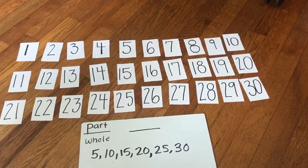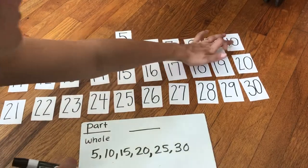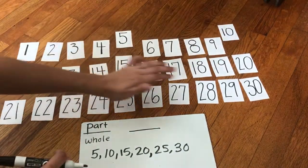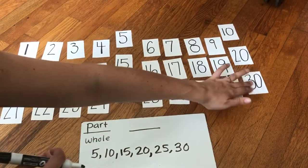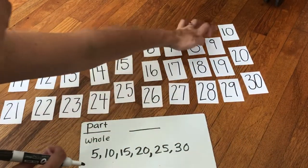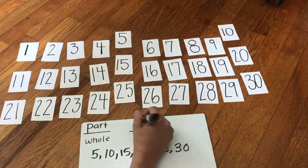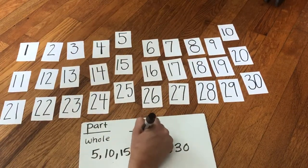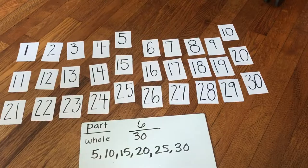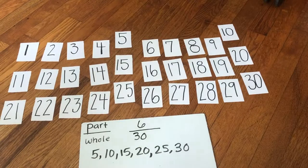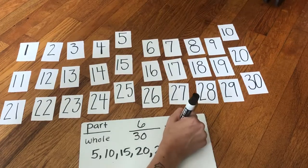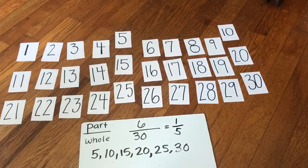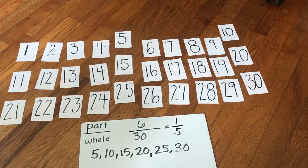So let's see how many cards that is. So I have five, 10, 15, 20, 25, and 30. So that's one, two, three, four, five, six. Six out of those 30 cards are multiples of five. And that can be reduced down to one fifth. So in its simplest form, that's one fifth of the cards are multiple of five.